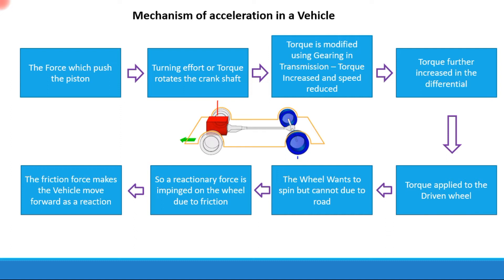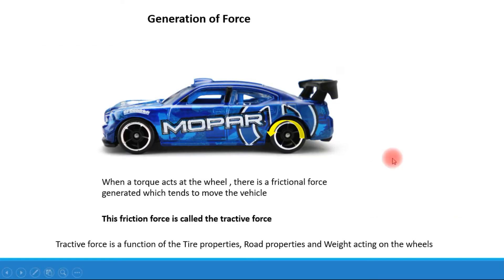That friction force actually makes the vehicle move forward as a reaction. The vehicle moves forward due to the friction reaction force, not due to the torque itself — the torque gives a reaction force on the road, and that helps the vehicle move forward. A force is generated when torque is applied to the wheel at the interface of the tire with the road, and that frictional force is called the tractive force.